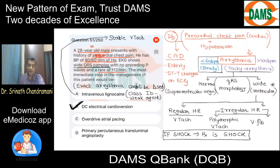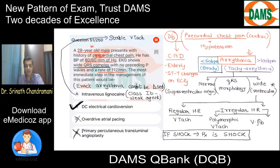Overdrive atrial pacing? No — this is a ventricular origin arrhythmia. Transluminal angioplasty? No — this is not a MI, not a coronary artery disease; hence it is not the correct answer. Here you have to go for DC electrical cardioversion. This is the short approach — learn the concepts and be the leader.